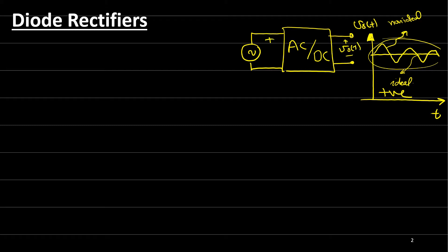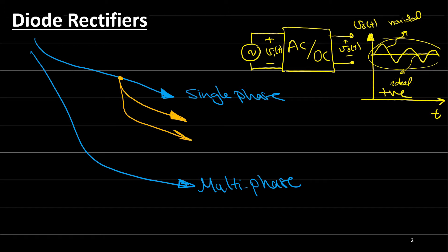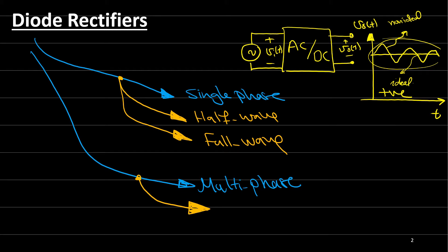The diode rectifiers can be divided into two main categories: the single-phase rectifiers and the multi-phase rectifiers. Each one of these categories — single-phase and multi-phase — can be further divided into two main categories: the half-wave rectifier and the full-wave rectifier.